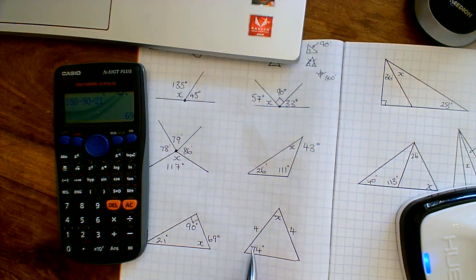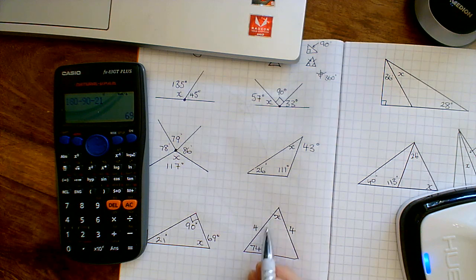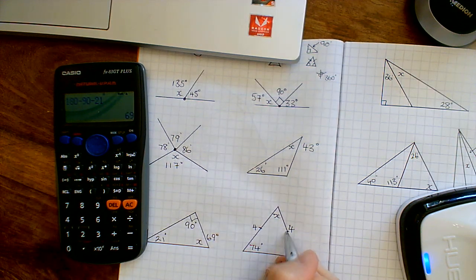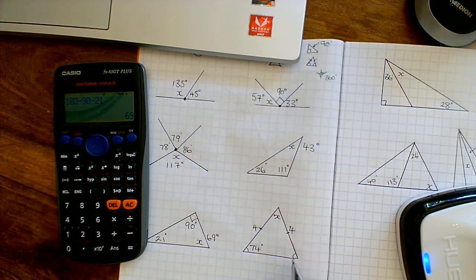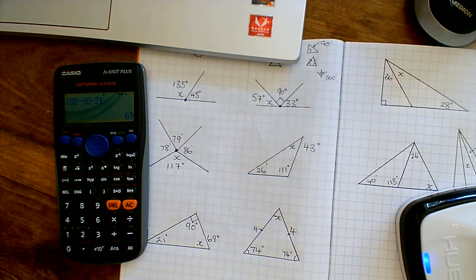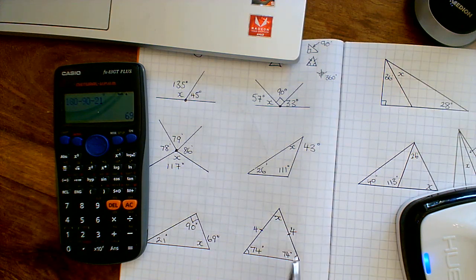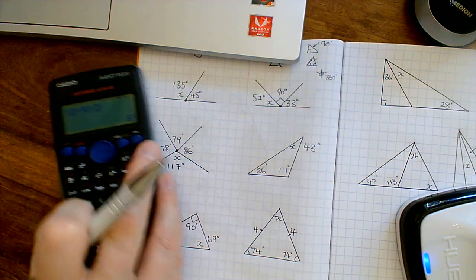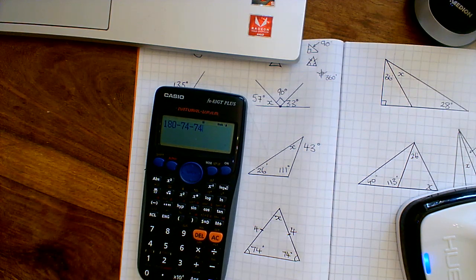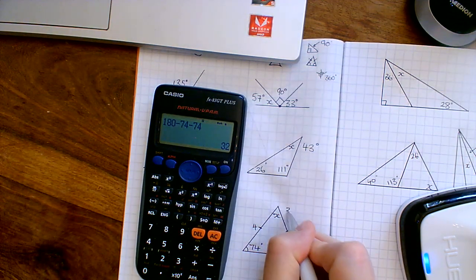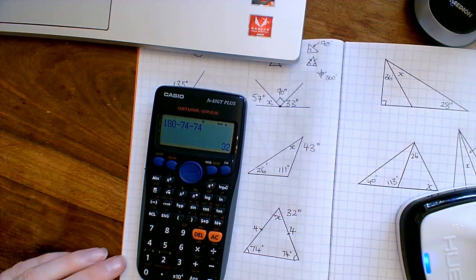This next one — these two sides are both 4cm, which tells me it's an isosceles triangle. We know the angles at the bottom of the legs have to be equal, so that one's also 74 degrees. Angles at the base of isosceles triangles are equal, so there are two 74s. Now angles in a triangle add to 180: take away 74 and take away the other 74, and that leaves 32 degrees for angle X.